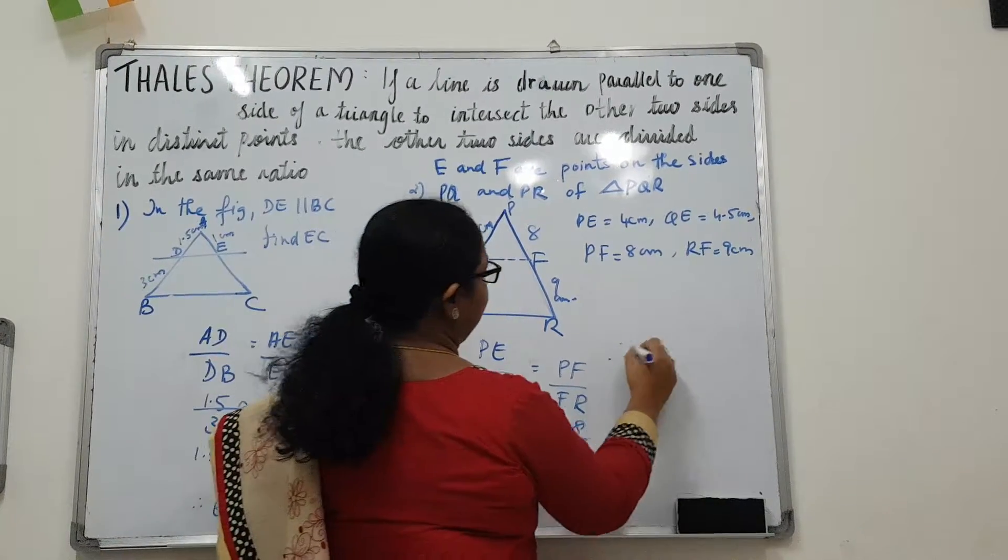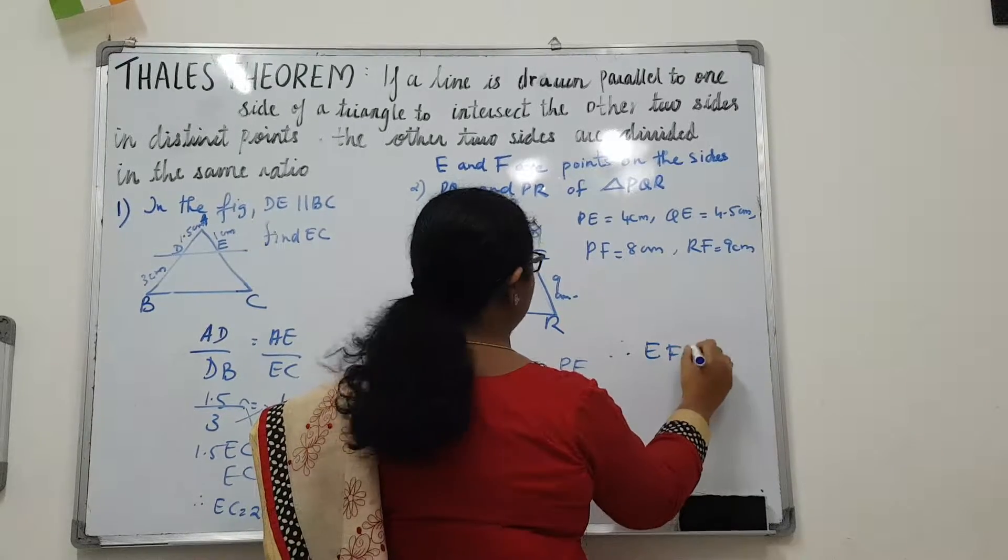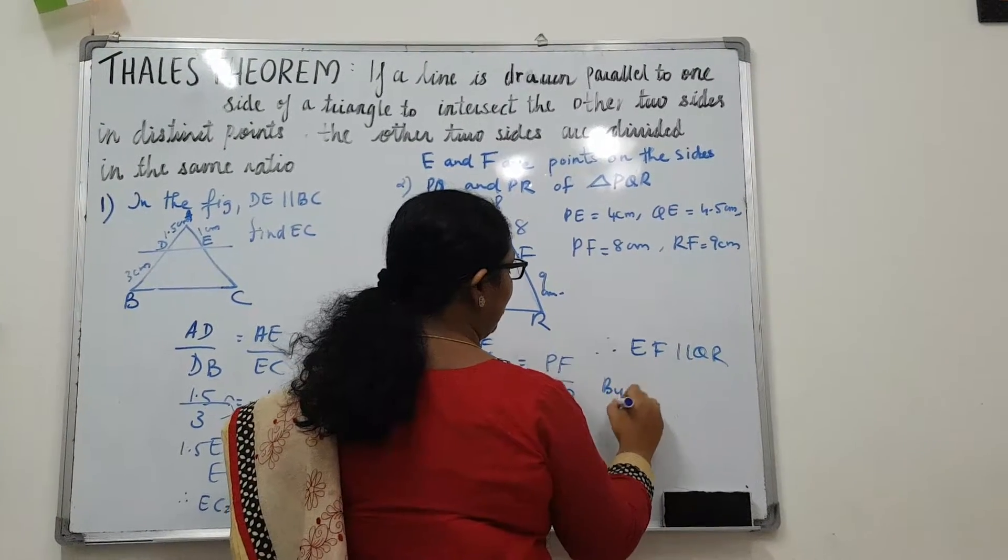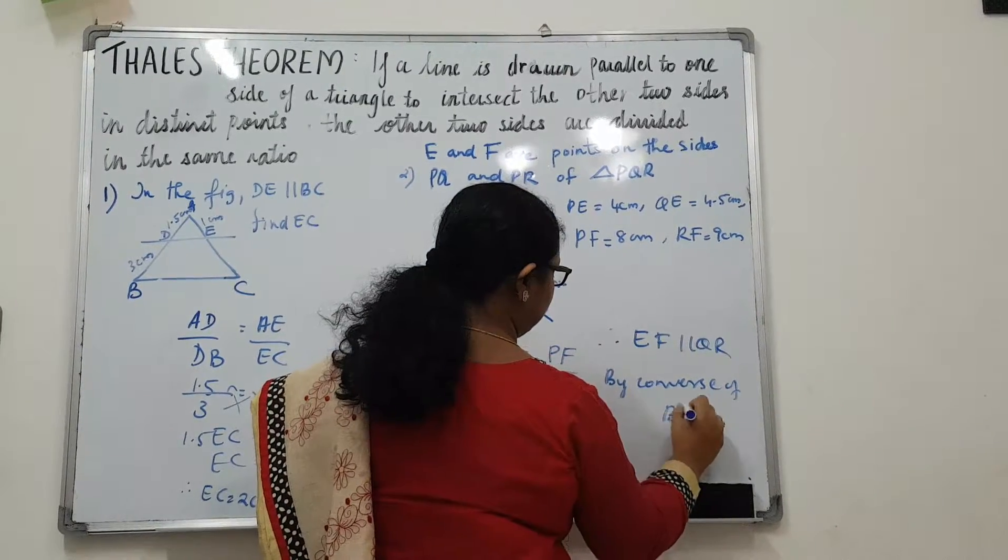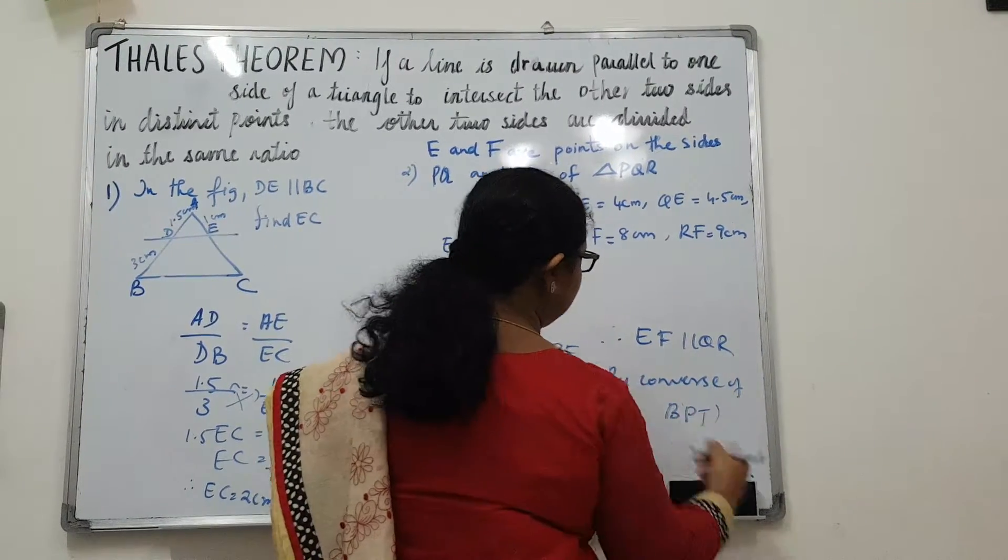Therefore, we can say that EF is parallel to QR by converse of BPT, basic proportionality theorem.